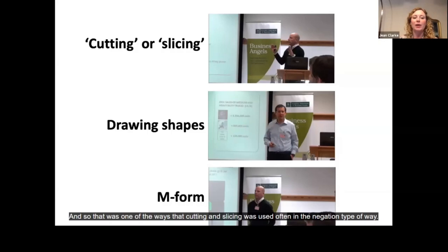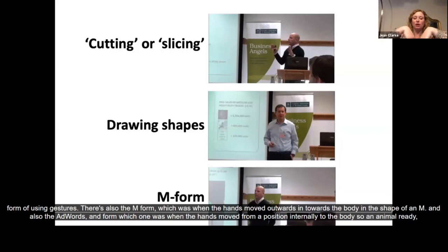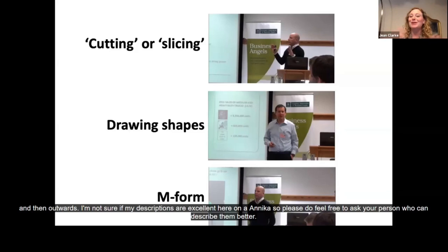The second type was drawing shapes — quite descriptive. Entrepreneurs illustrated things with their hands: it could be numbers, the distance between things, or a very descriptive form of using gestures. There's also the M form, where the hands moved outwards in towards the body in the shape of an M, and also the outward form, where the hands moved from a position internally to the body outwards.